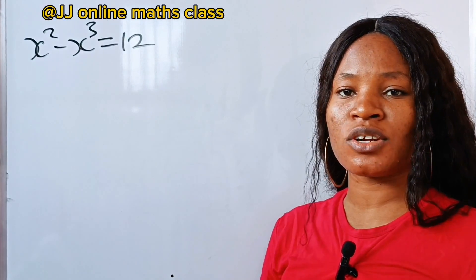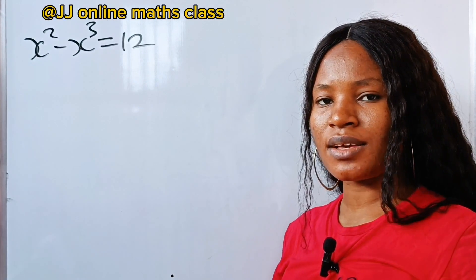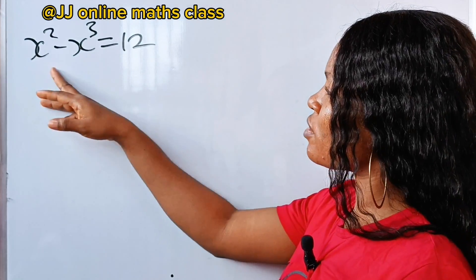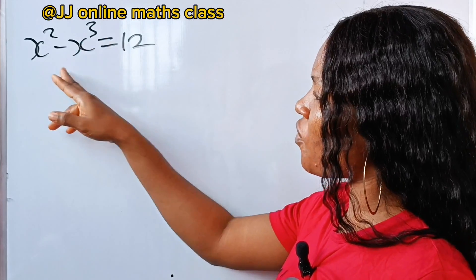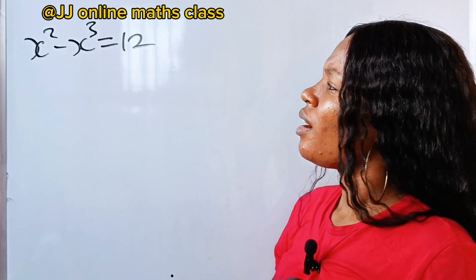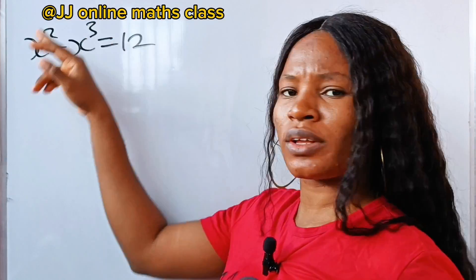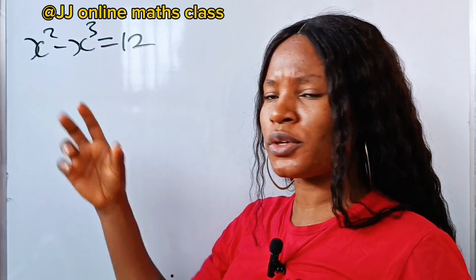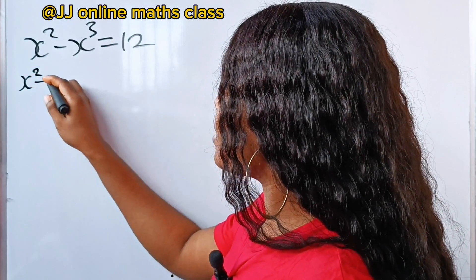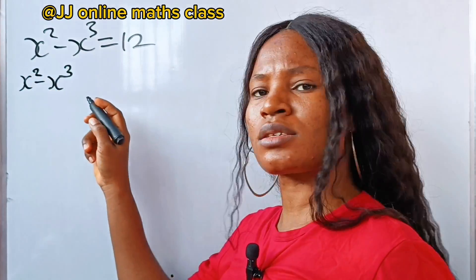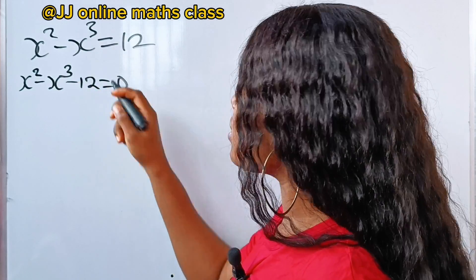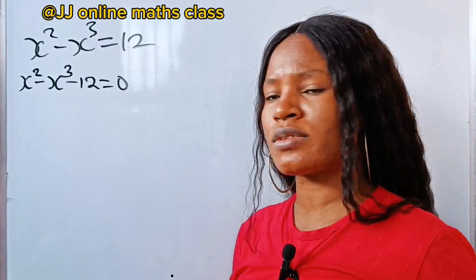This is a Harvard entrance exam and let's see if we can get this together. Today we are going to discuss how to solve for x in this equation. First, let's bring this 12 to the other side of the equation. So we have that x squared minus x to the power of 3 minus 12 is equal to 0.